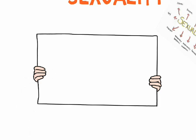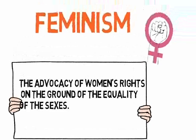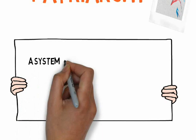Moreover, sexuality is the capacity for sexual feelings and a person's sexual orientation or preference. However, we will use the second definition in the video. Feminism is the advocacy of women's rights on the ground of the equality of the sexes. To Oxford, culture is a refined understanding or appreciation of culture. Patriarchy is a system of society or government in which men hold the power and women are largely excluded from it.